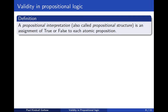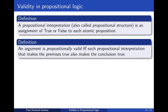So what is validity in propositional logic? This is what we are going to make precise. And as we saw earlier, what this amounts to is making precise what an interpretation is. Here we give a definition: a propositional interpretation is simply an assignment of true or false to each atomic proposition. Given that we have defined the notion of interpretation, we can then simply use the definition of validity that we stated before: an argument is propositionally valid if and only if each propositional interpretation that makes the premises true also makes the conclusion true.